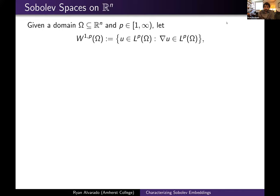There's a higher order theory, but for the purposes of this talk, first order derivatives are all that we'll need. This space can be turned into a Banach space when you equip it with the following norm, which encodes information about both U and its gradient measured in the L^p norm.